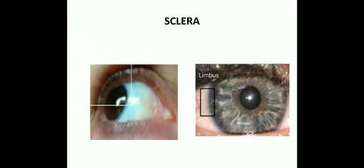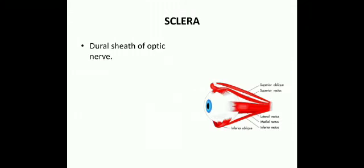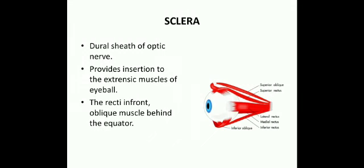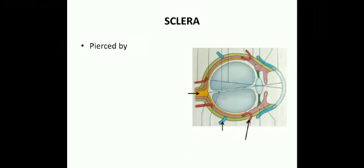The conjunctival part of the sclera appears white, and another diagram shows the limbus, the junction between the sclera and the cornea. Posteriorly, the sclera is covered with a dural sheath of the optic nerve. It provides insertion to the extrinsic muscles of the eyeball — the recti in front and the oblique muscles behind the equator.